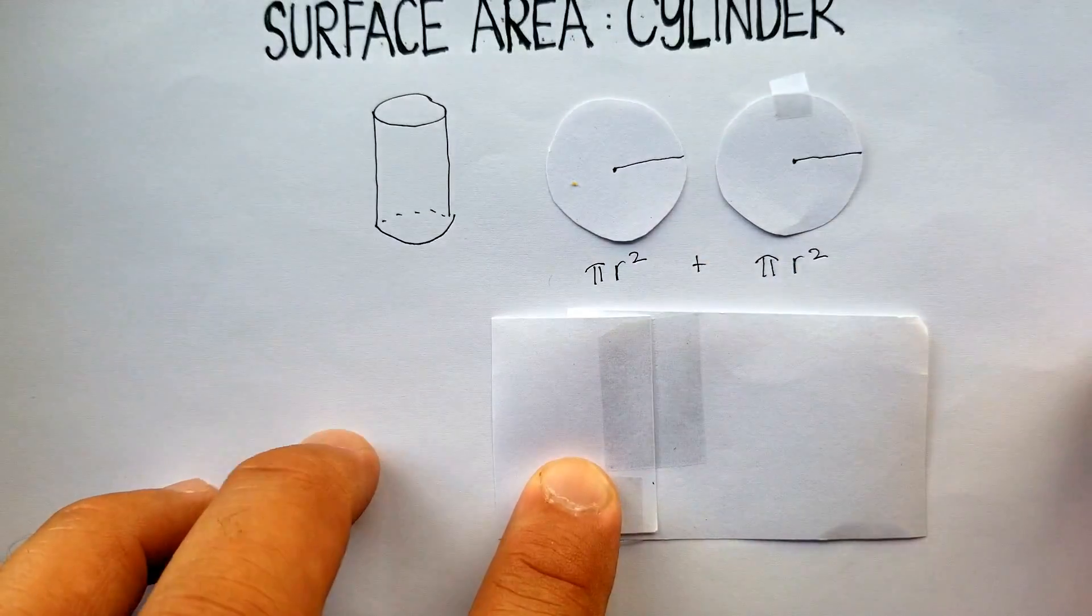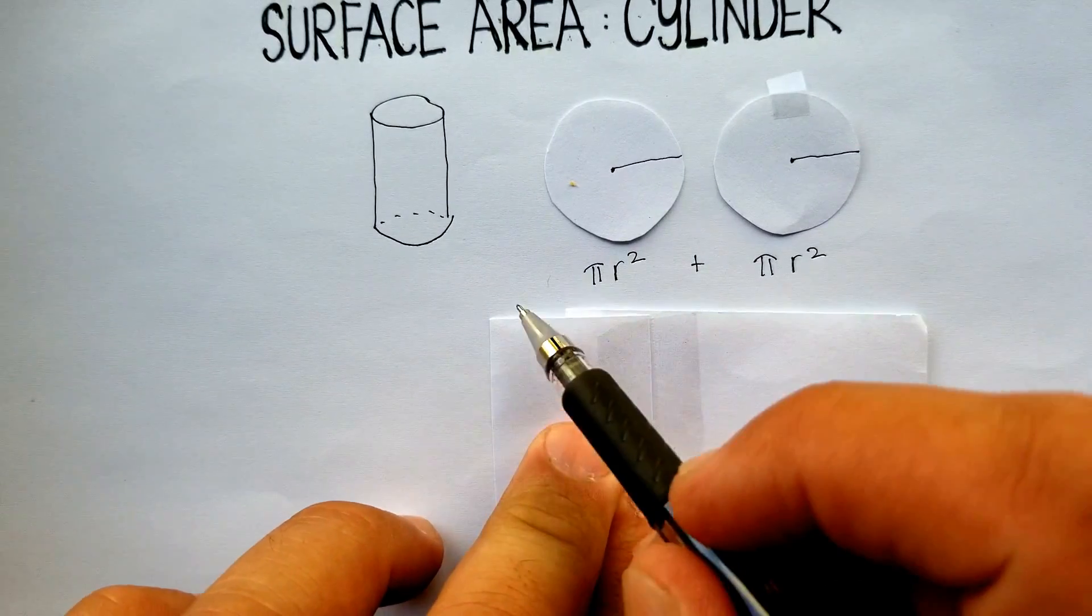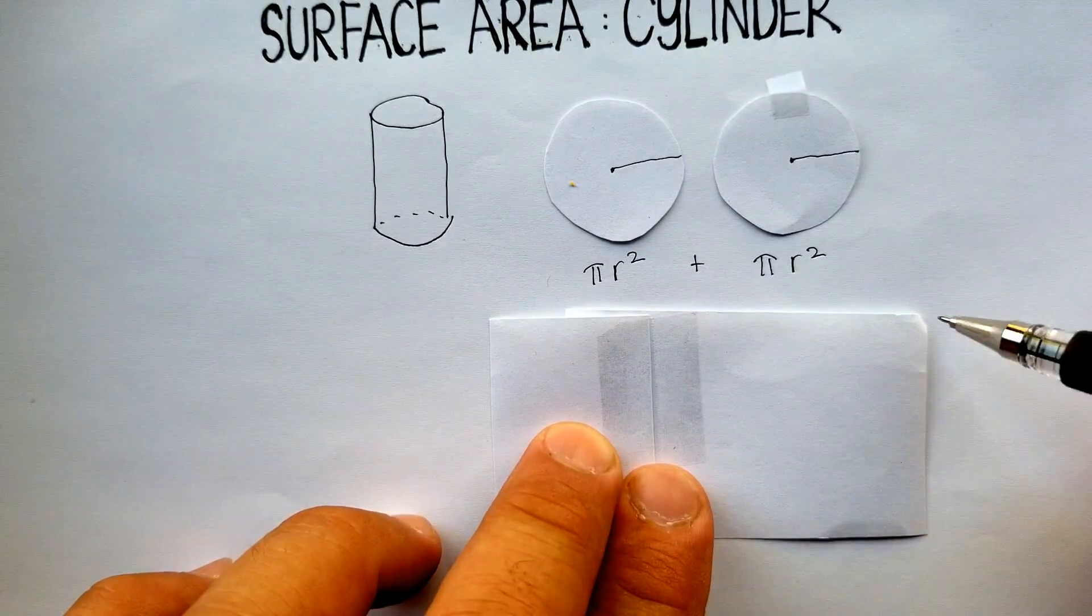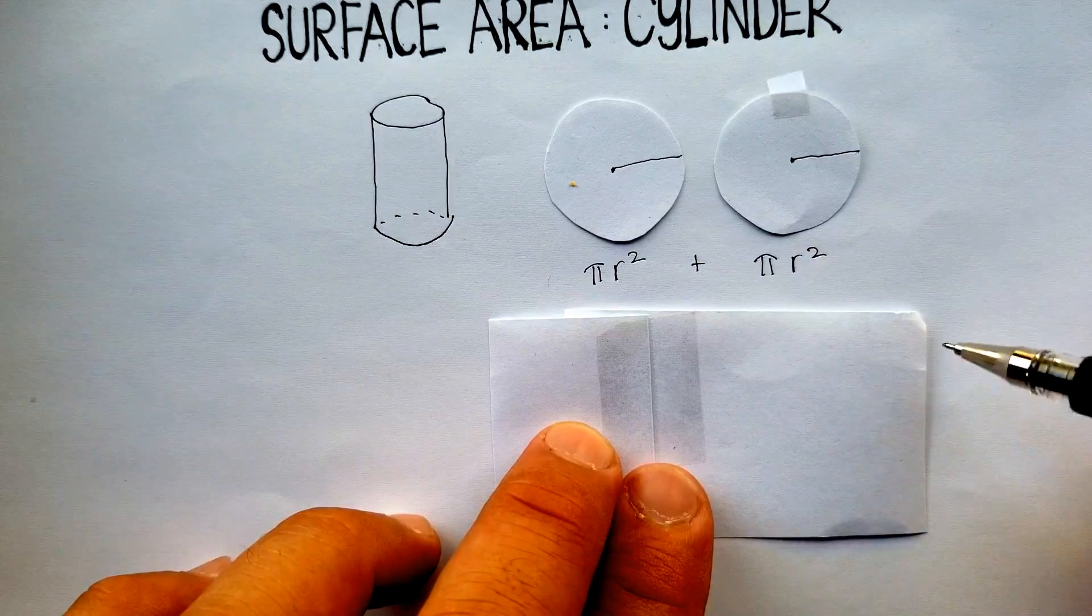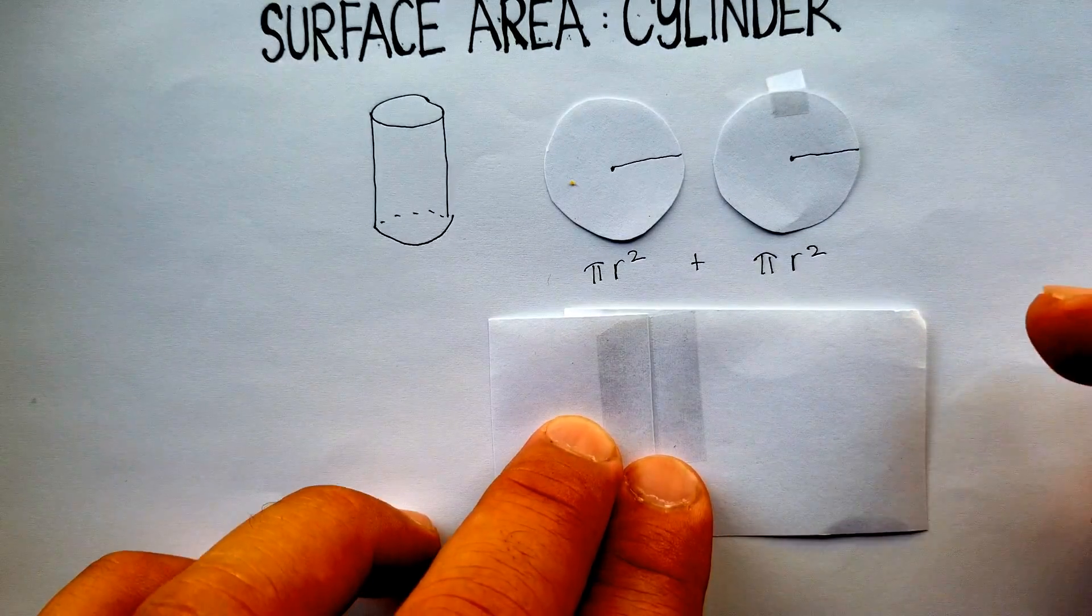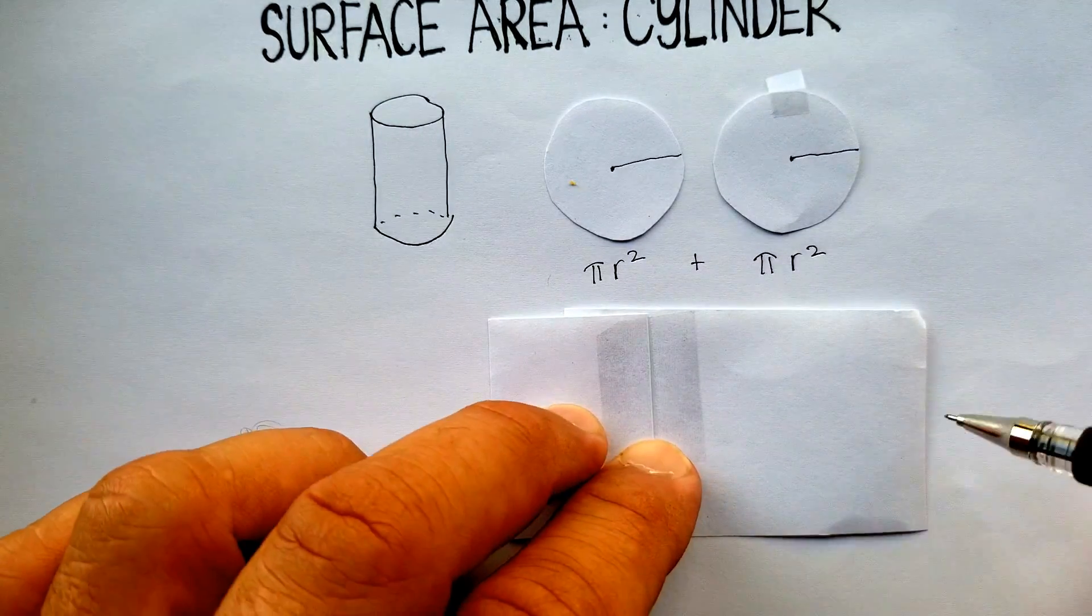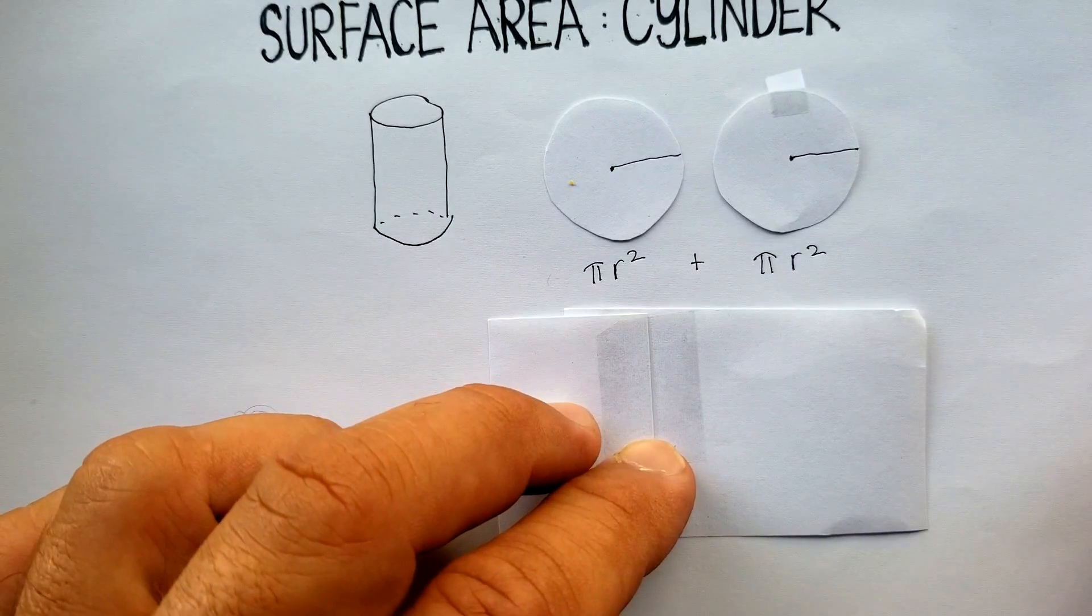What I've got here is this side here, the width, and then I've got the height. Which part is which? Is there any other way that I can figure out what the height and the width are?